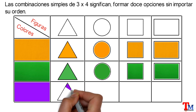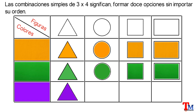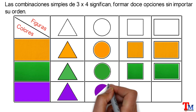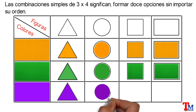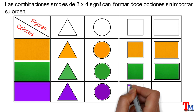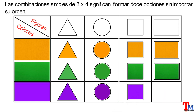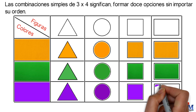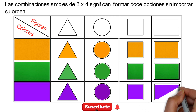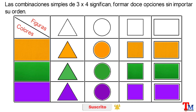Combinando el color morado con el triángulo, tenemos una opción. Combinando el color morado con el círculo, tenemos otra. Combinando el color morado con el cuadrado, tenemos otra. Y combinando el color morado con el rectángulo, tenemos la última. Y de esta forma se definen las combinaciones simples de 3x4.